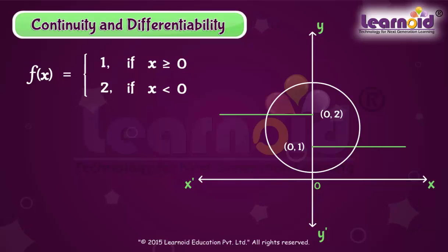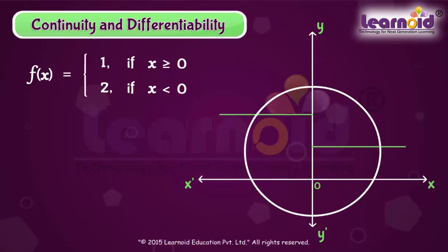Let us examine points close to x equal to 0 in the graph. At points near and to the right of 0, that is points like 0.1, 0.01, and 0.001, the value of the function is 1.